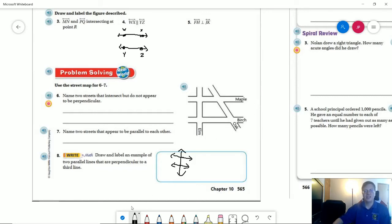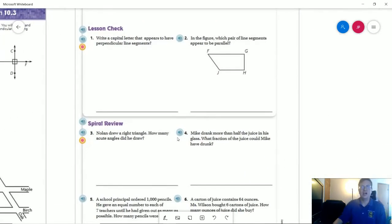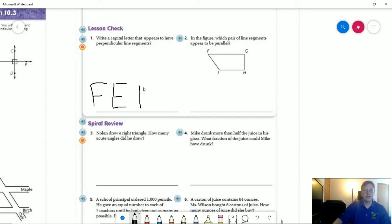So using that idea that I started with here, what capital letters can we use to have perpendicular line segments? So one of them would be the letter F, another one would be the letter E, H will also work as will I, and T.